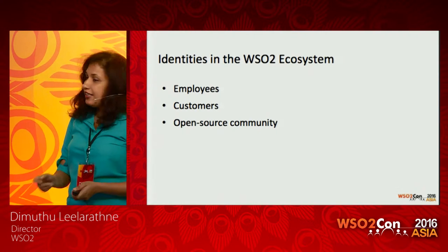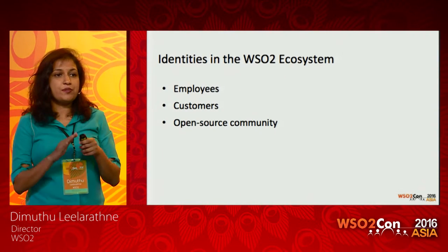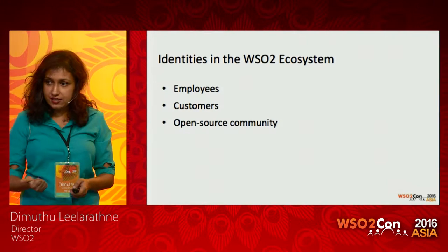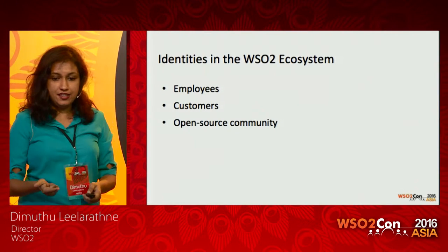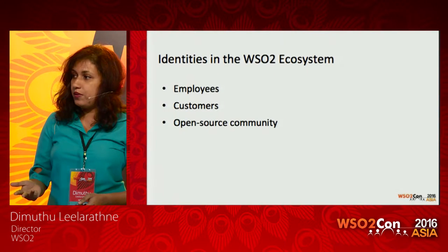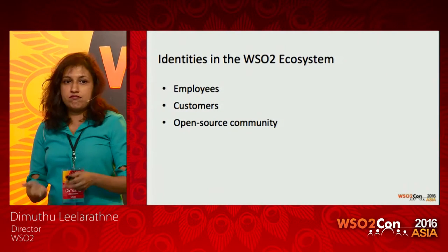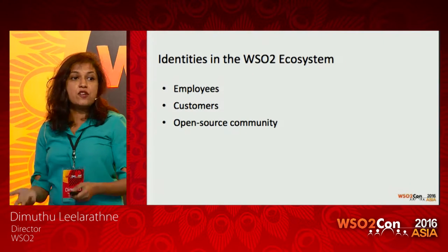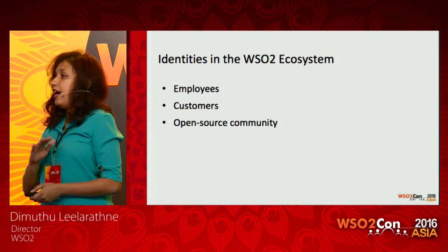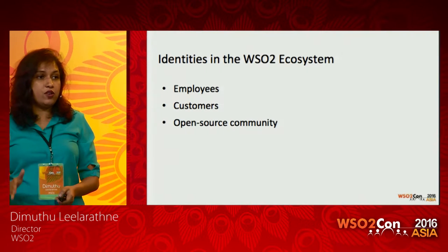Identities in the WSO2 ecosystem fall into three main categories. We have employees whose identity we need to manage, we have customers, and we have the open source community — which is in the range of thousands. We need to manage the identities of all three types of people.